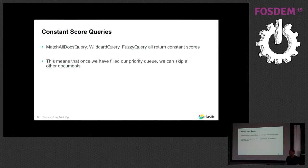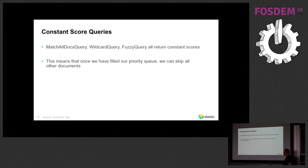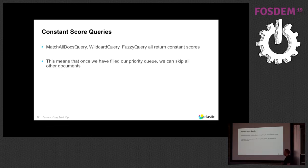For constant score queries, if we're not interested in counting the total number of hits and just want to shortcut things, because everything has the same score and the secondary sort order is by increasing document ID, the first 10 documents that match are going to be the top 10 scoring results — so we can just shortcut and return them straight away. Match all docs query — we noticed in Elasticsearch that match all docs query had actually slowed down after we implemented block max scoring. It turned out it was using a bulk scorer which didn't take things into account, and once we fixed that, match all docs query sped up by something like 4,000%.